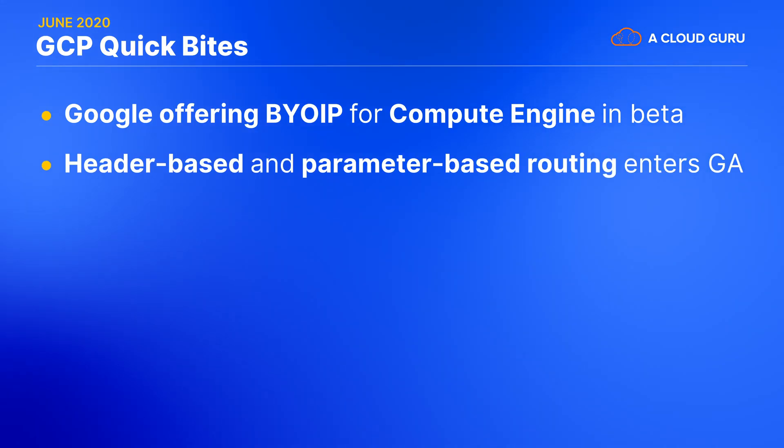External Load Balancer header and parameter-based routing has finally entered GA. No longer do you need extra services like Nginx to manage your routing for custom situations. External Load Balancer can now natively make decisions based on HTTP header information and URL query parameters. A-B testing, selector routing to different back-ends, or just giving different user experiences based on URL parameters just got a whole lot easier.